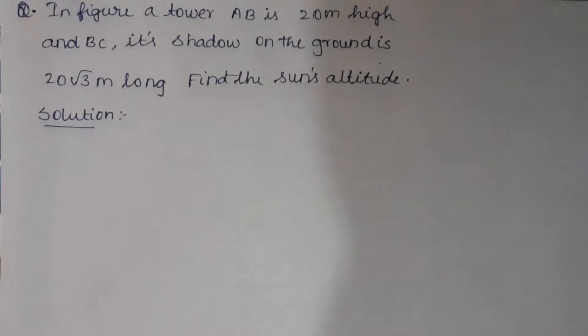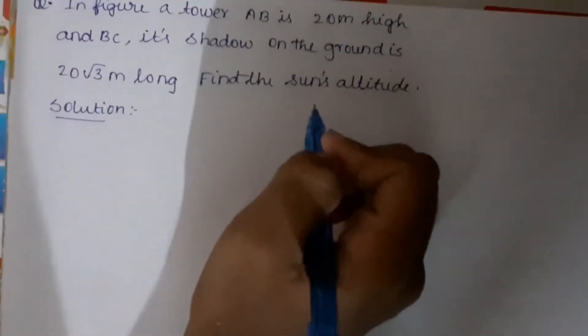In the figure, tower AB is 20 meters high and its shadow on the ground is 20√3 meters long. We need to find the sun's altitude, which is the angle of elevation of the sun.